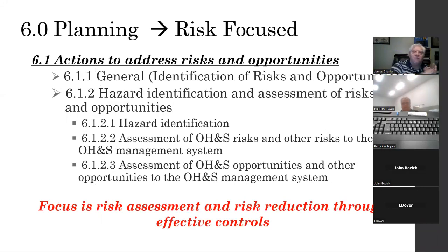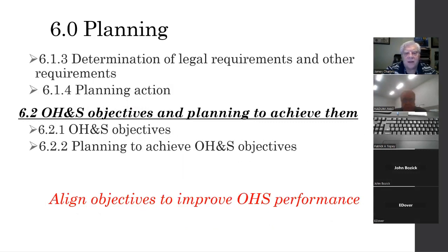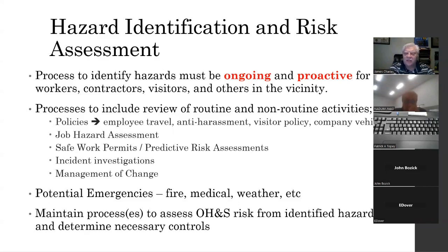Under the planning section, much like the 14000 standard, it's a big deal. We've got requirements to identify hazards, assess risk, and determine the needs for controls. We also have a section on establishing and documenting occupational health and safety objectives. The big difference between a compliance-based program and 45001 is you need to expand the people you're worried about. A JHA does a good job looking at employee risk at a station, but you've also got to look at visitors, contractors, and all these other people — identifying hazards to them and establishing risk and controls.